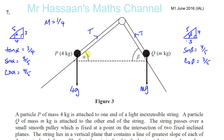Since P is on the point of slipping down the plane and there's friction on this plane, friction must be acting in the opposite direction — it must be acting up. Because we're in limiting equilibrium, friction has reached its maximum value, which is mu times R. So we need to find the reaction force R at P.